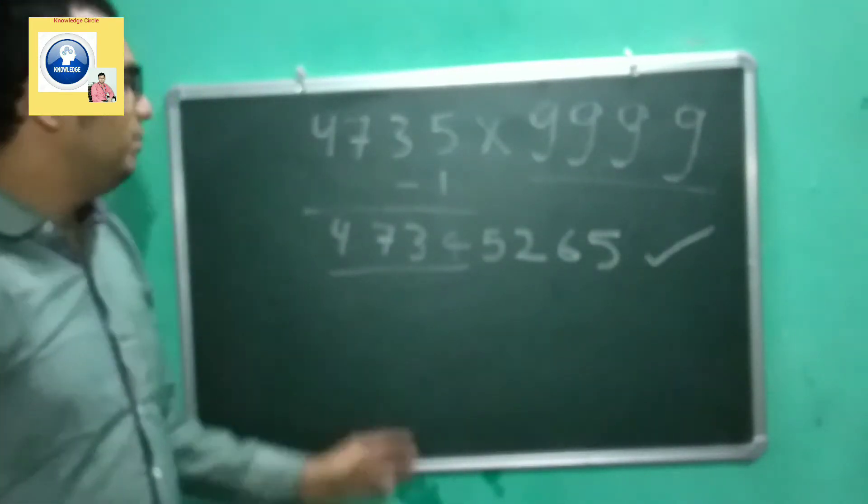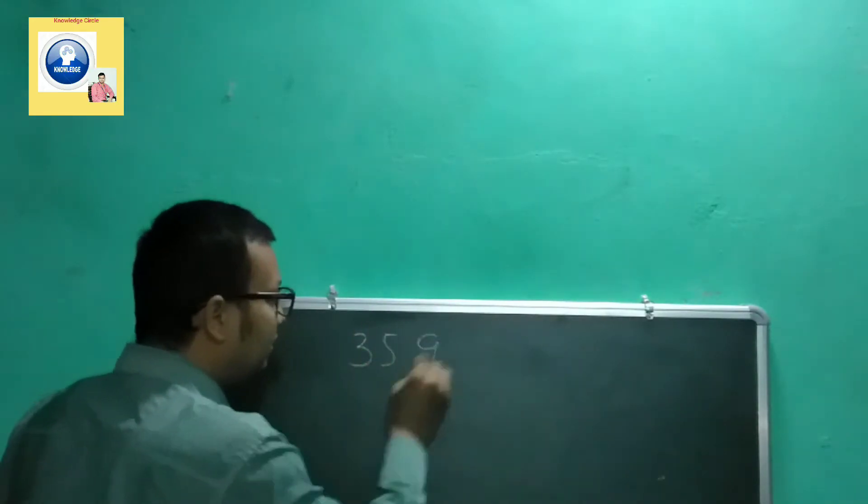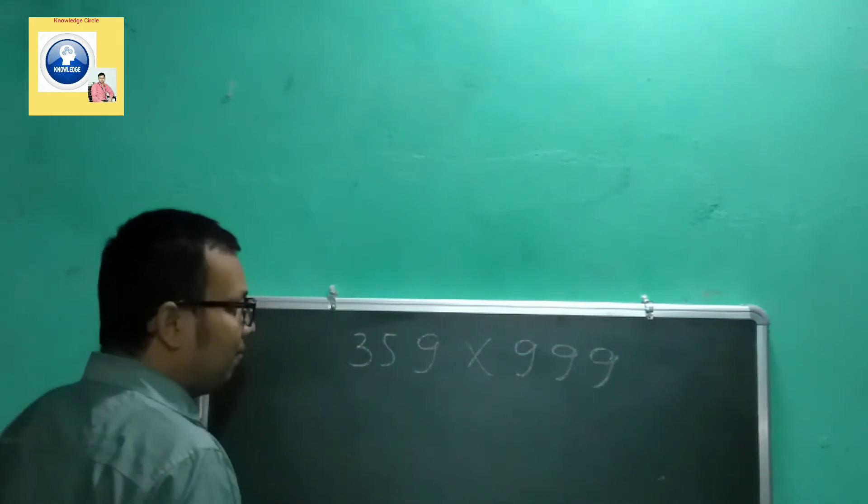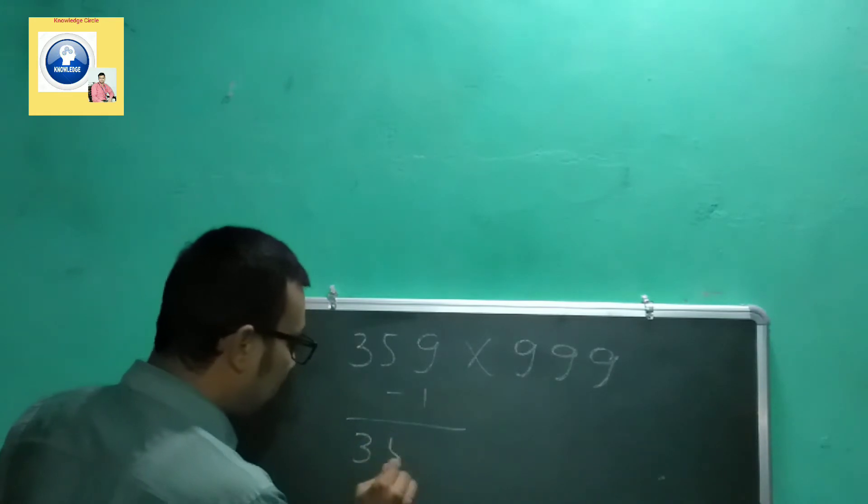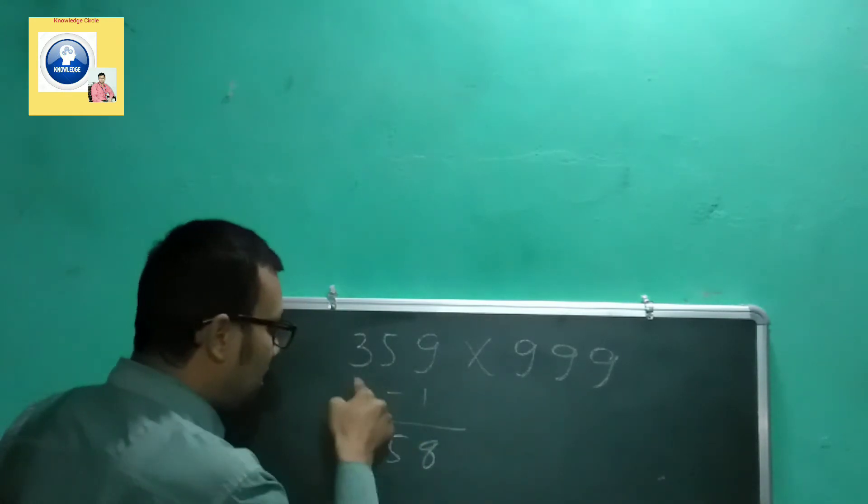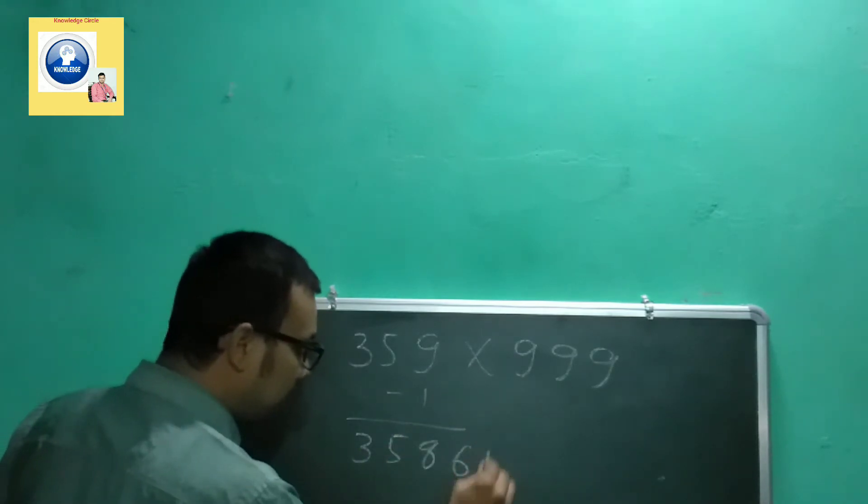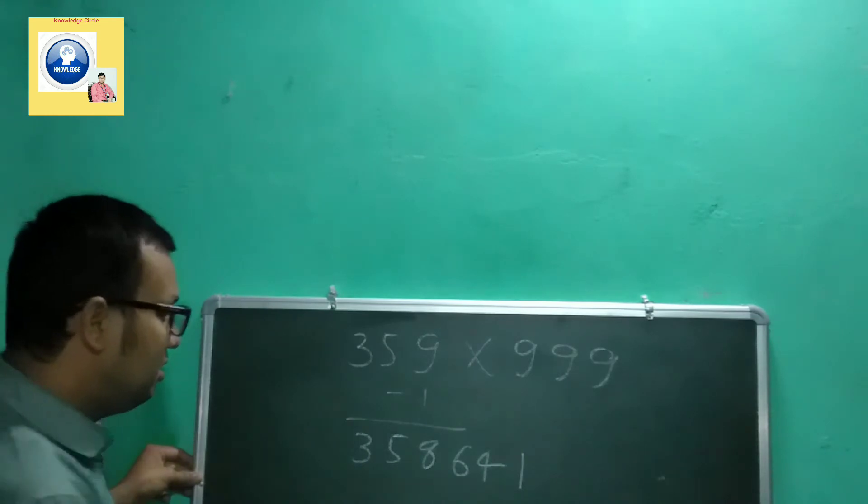Let's have another example: 359 into 999. What we'll do is subtract 1, it will be 358. 9 minus 3 is 6, 9 minus 5 is 4, 9 minus 8 is 1. This is the answer. You will get the answer correctly.